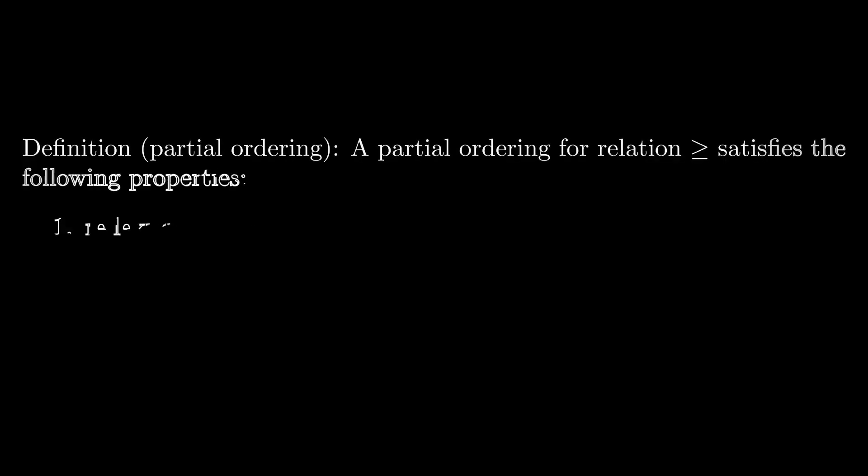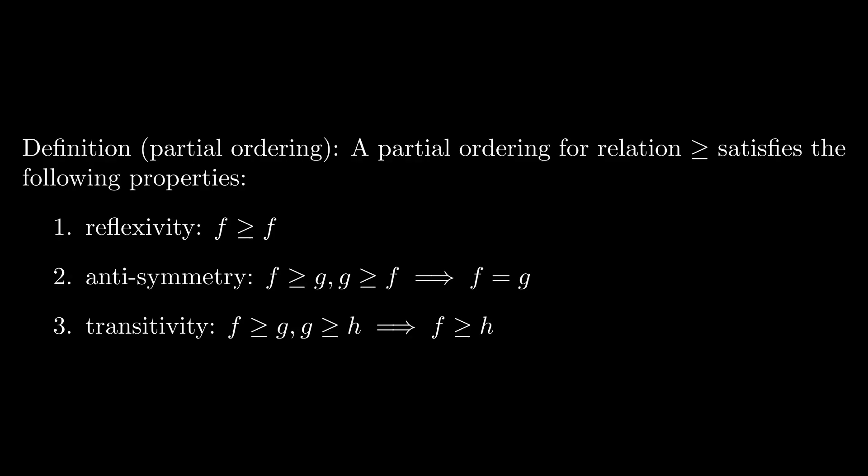Furthermore, from a mathematical standpoint, the statements f equals O(g) and f equals Omega(g) are both examples of what we call partial orderings. A partial ordering for a given relation, which we represent using the greater than or equal to sign, implies the following three properties are satisfied.